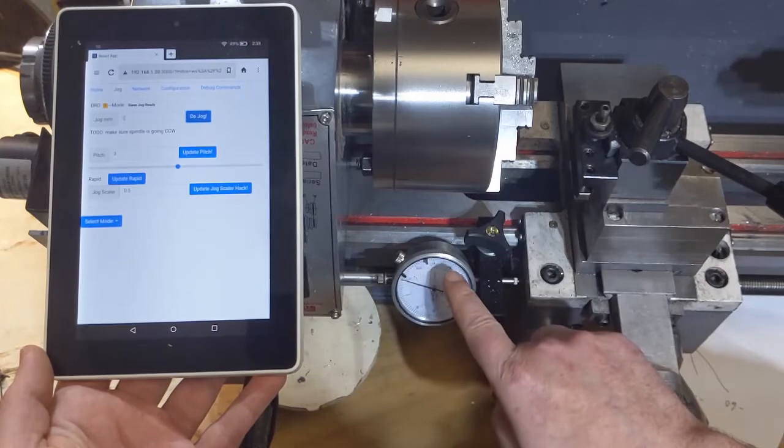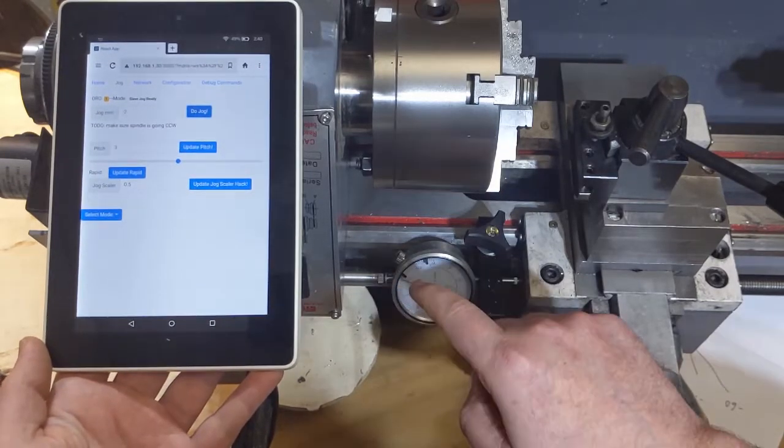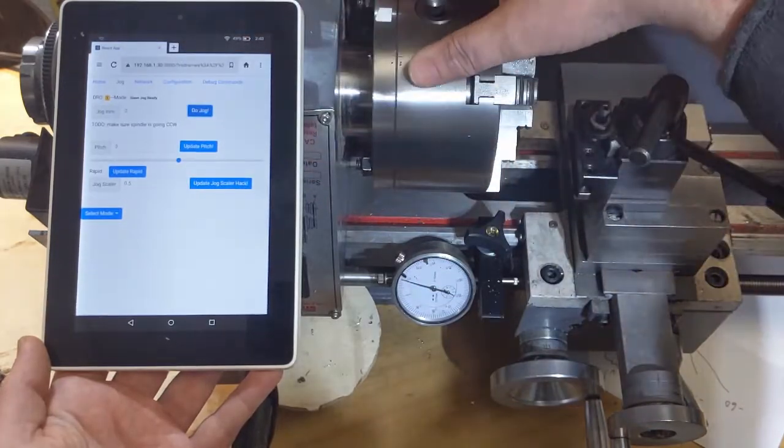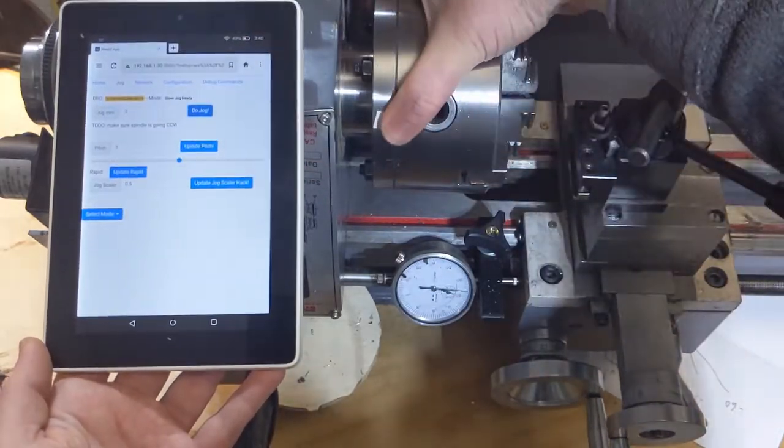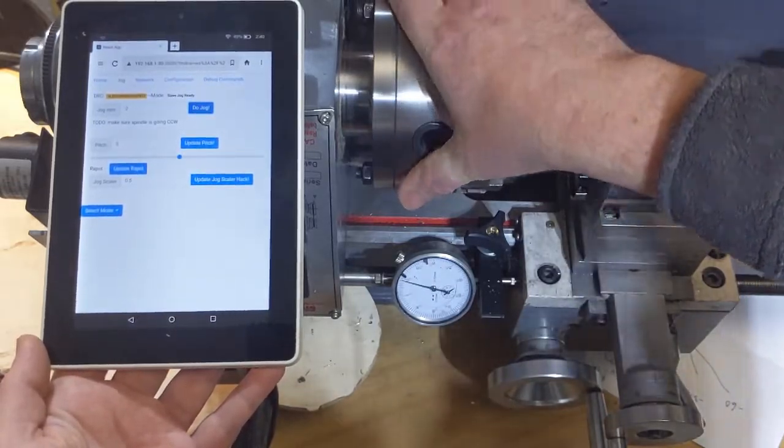Now again there's backlash so the initial two millimeters is going to be two millimeters less the backlash. So we'll go ahead and do this again. Should go right back on the 10. That's one millimeter and two millimeters.